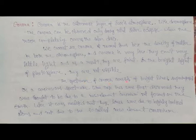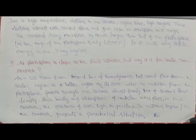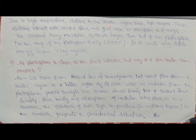The spectrum of corona consists of bright lines superimposed on a continuous spectrum. When these lines were first discovered, they were thought to be due to a new element which they called coronium. Later it was realized that these lines were due to highly ionized atoms and not due to the so-called new element coronium.